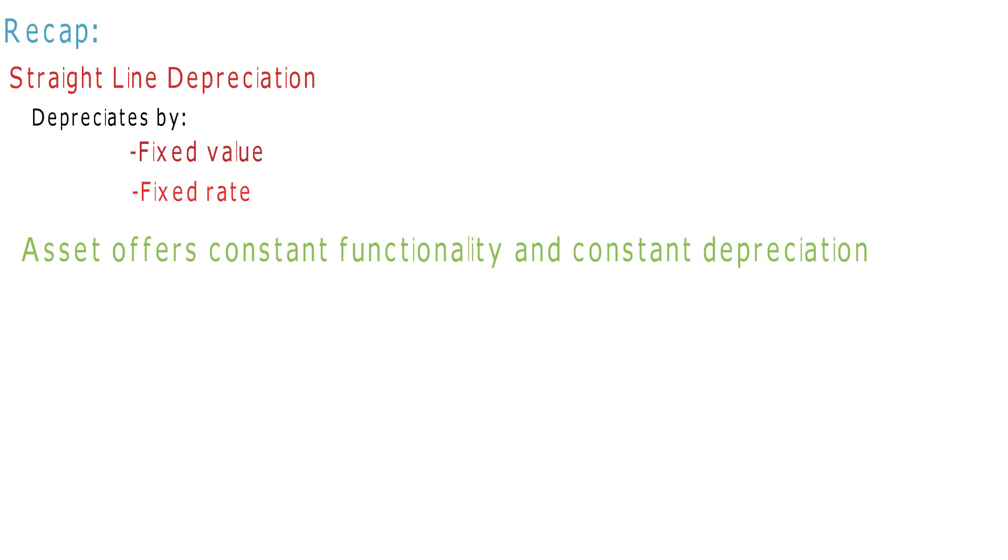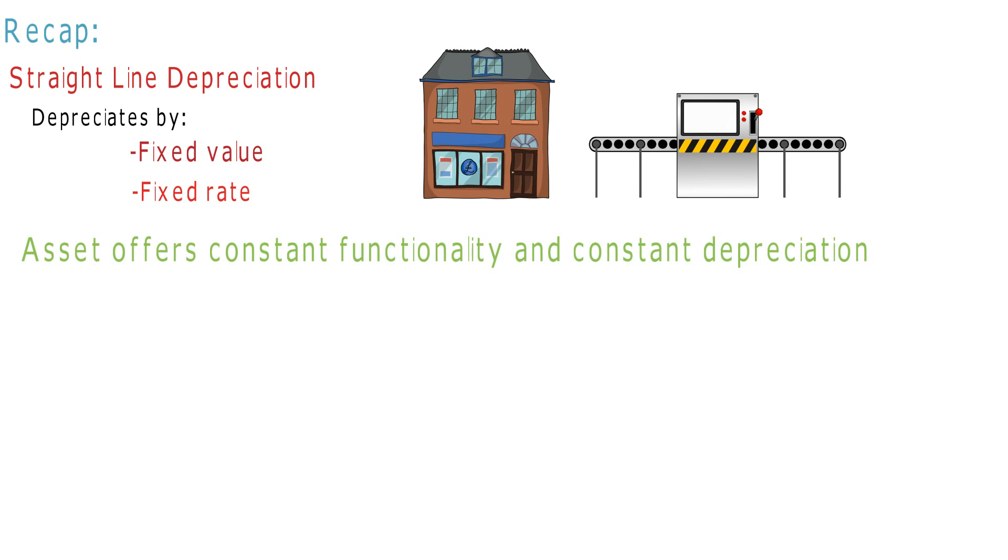To recap, straight line depreciation is where a fixed asset depreciates by the same value every year or financial period and by a fixed percentage. This is useful if you expect the asset to offer constant functionality or have a constant depreciation, like a building or fixed machinery.